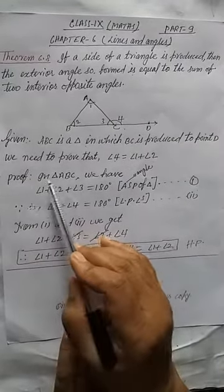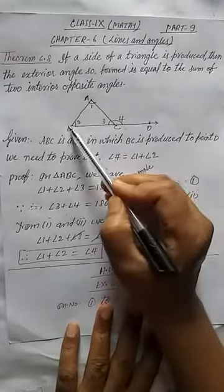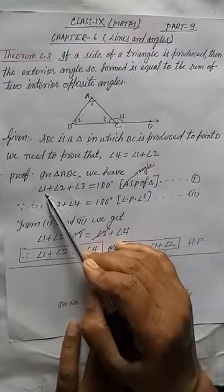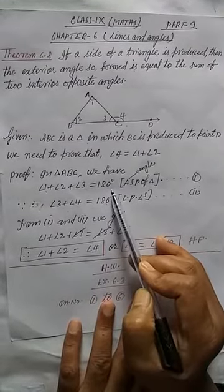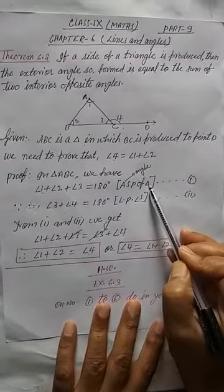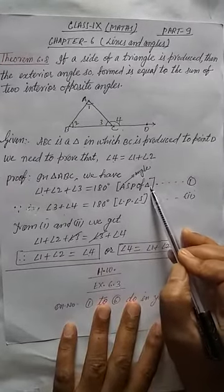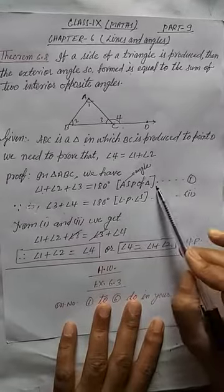Now, proof. In triangle ABC, we have: we can write angle 1 plus angle 2 plus angle 3 is equal to 180 degrees. What is the reason? We can say angle sum property of a triangle, or we can say sum of all angles of a triangle is 180 degrees. That's why we can write like this. So this is equation first.